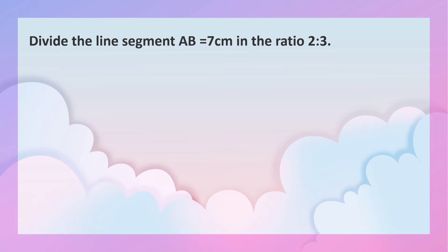Divide the line segment AB equal to 7 cm in the ratio 2 is to 3. Let us draw a line segment which is 7 cm in length and name it as AB.